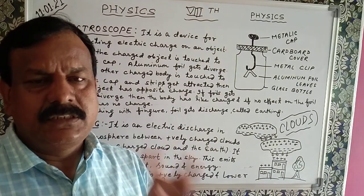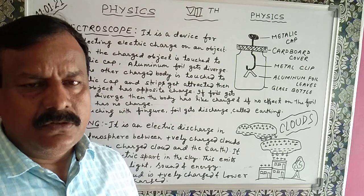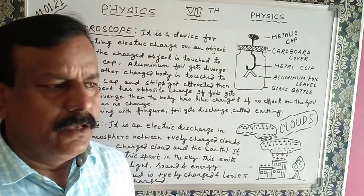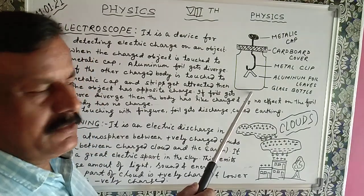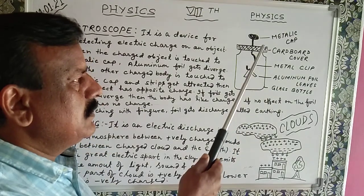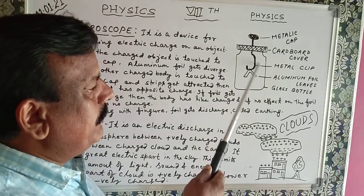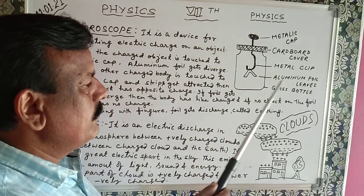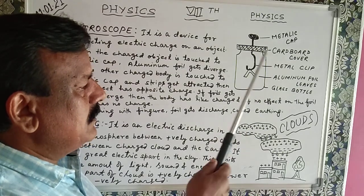If a body is having charge or not and nature of charge also - either it is having positive charge or negative charge - so all these are detected by this device. It consists of one metallic cap you can see, and one metal clip. This is metal clip and it is covered with cardboard cover, and these are aluminium foil slicks, and this is a glass bottle.